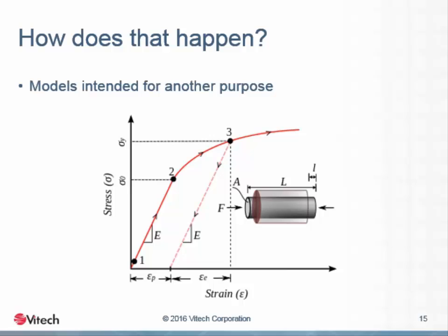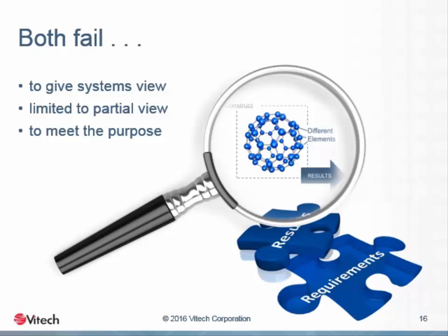This also happens when we are encouraged to use models intended for an entirely different purpose, such as physics-based performance models, as the basis for model-based systems engineering. These models do not offer the systems view required for model-based systems engineering design work. Valuable for their intended purpose, these models are inadequate as the basis for system design. They fail because their limitations make them inadequate for providing the necessary systems view — perfectly adequate for their intended purpose, but not suitable to support model-based systems engineering.